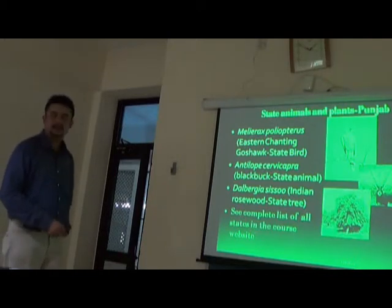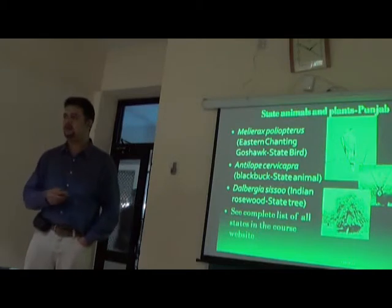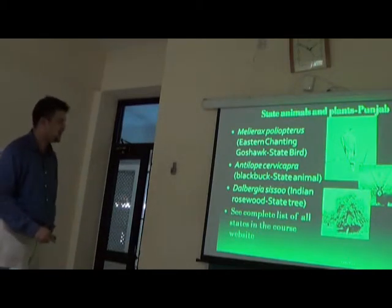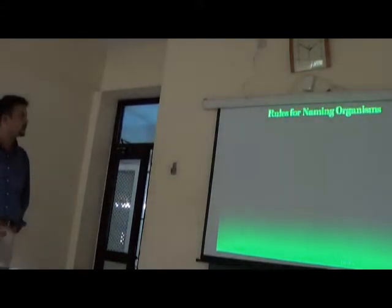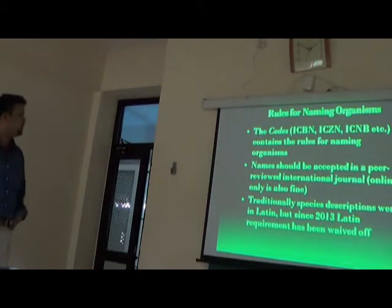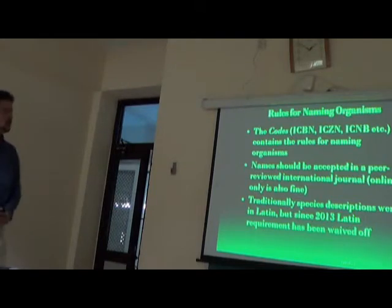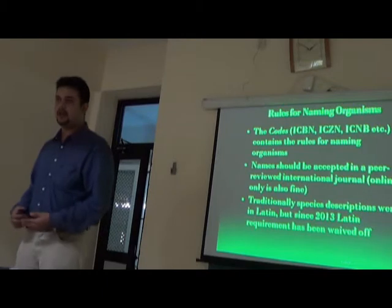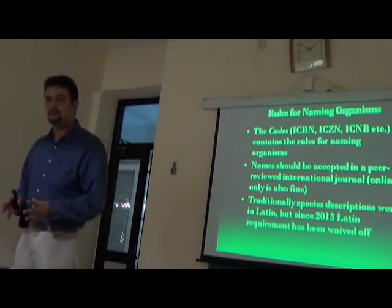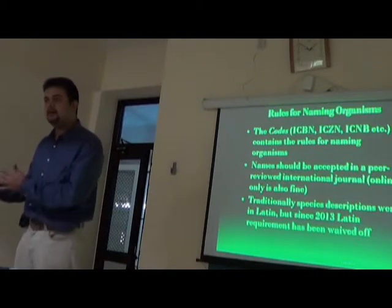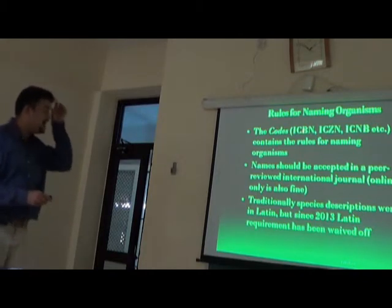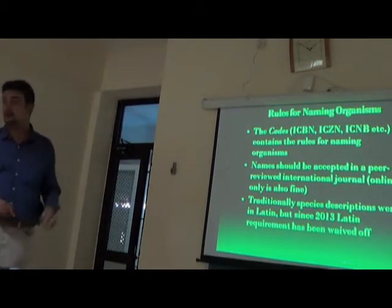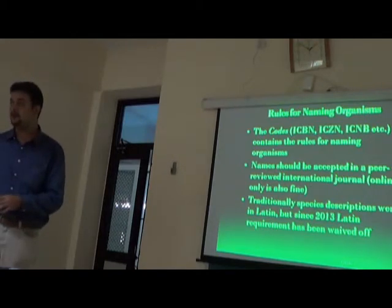A complete list of state animals, birds, and other state biodiversity is available on the course website — download it and try to memorize. When it comes to rules for naming organisms, there are several established codes depending on the taxonomic group: ICBN is the International Code for Botanical Nomenclature, used for plants including algae and ferns.